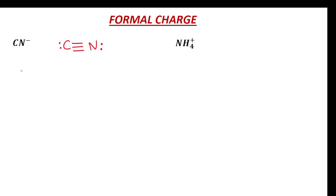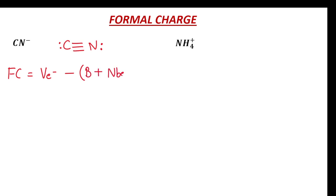The formula for formal charge is: formal charge equals number of valence electrons minus the sum of number of bonds plus number of non-bonded electrons.